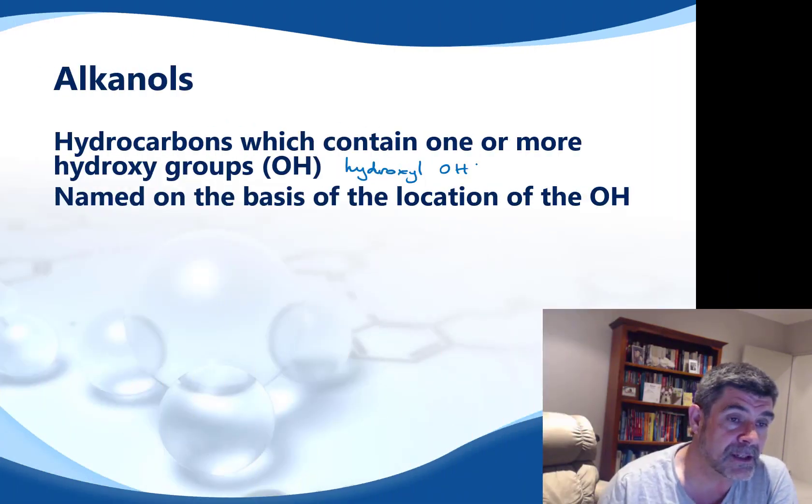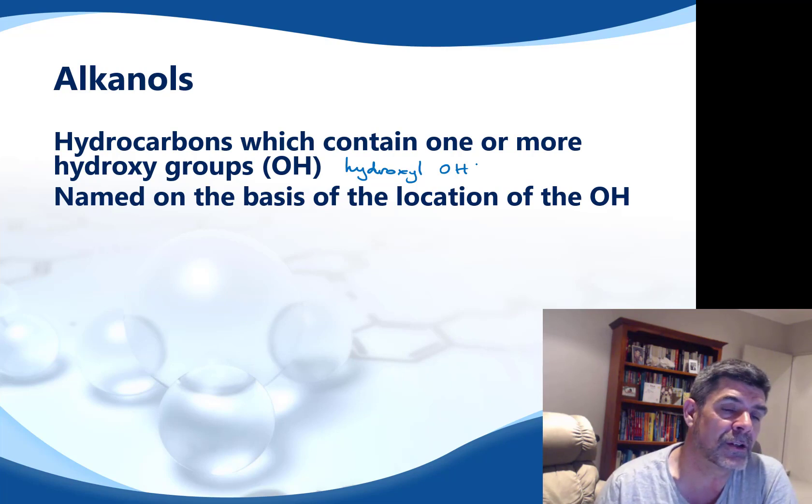Unless there is no ambiguity, we also need to identify the position of the OH functional group in the chain. So let's have a look at a couple of examples just to get us started.